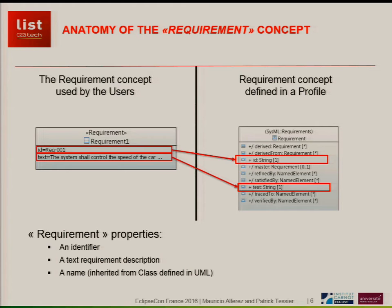The concept of a requirement is not that complex. A requirement has an identifier, a text that tells you which things the system shall do, and a name. But if we look into the details of a SysML requirement, you will find many more relationships — for example, from which requirement or to which requirement this requirement derives from, if the requirement is a copy or is supposed to be copied, if it is refined by a use case or something like that, and if it is satisfied — maybe by a block, a use case, or a set of packages.